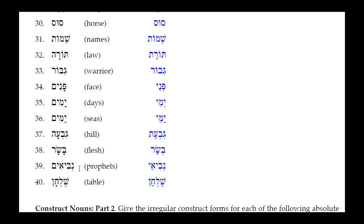Number thirty-seven: Nevi'im — masculine plural absolute. The Hirik Yod tells you it is absolute, masculine plural. To bring it into masculine plural construct, we take the Hirik Yod Mem Sofit off and put a Seri Yod in its place. That is the only change. Result: Nevei — the masculine plural construct of Nevi'im.